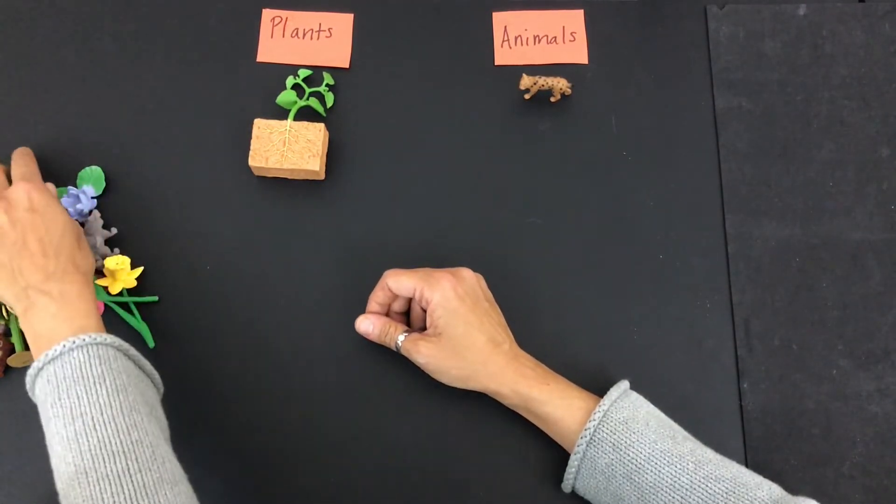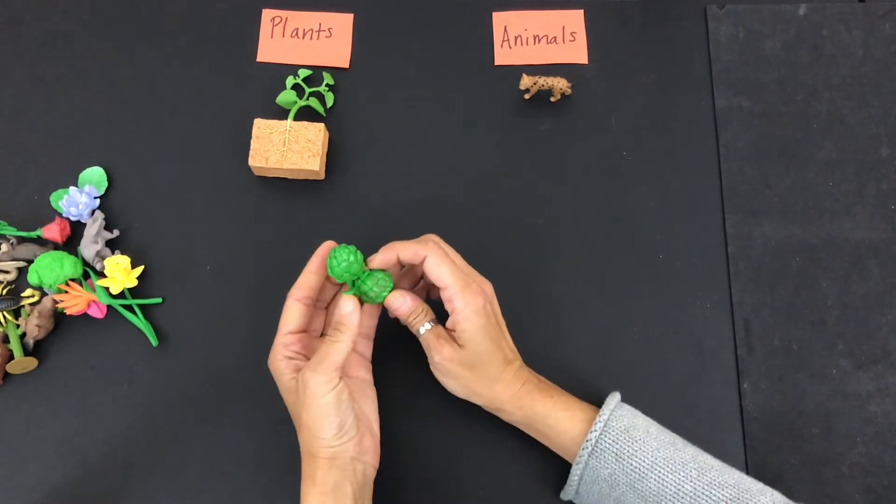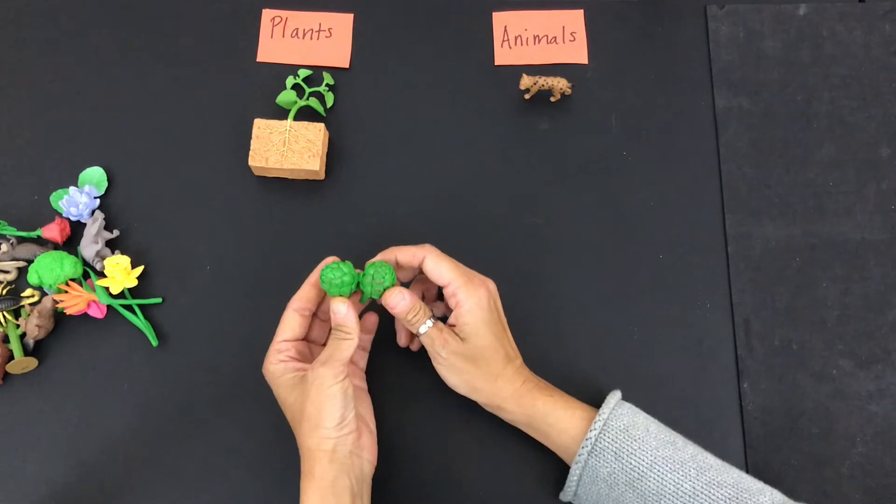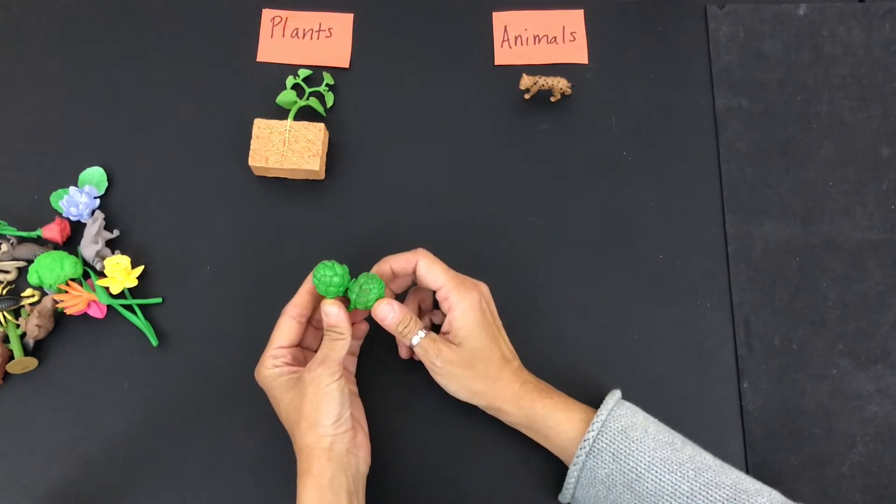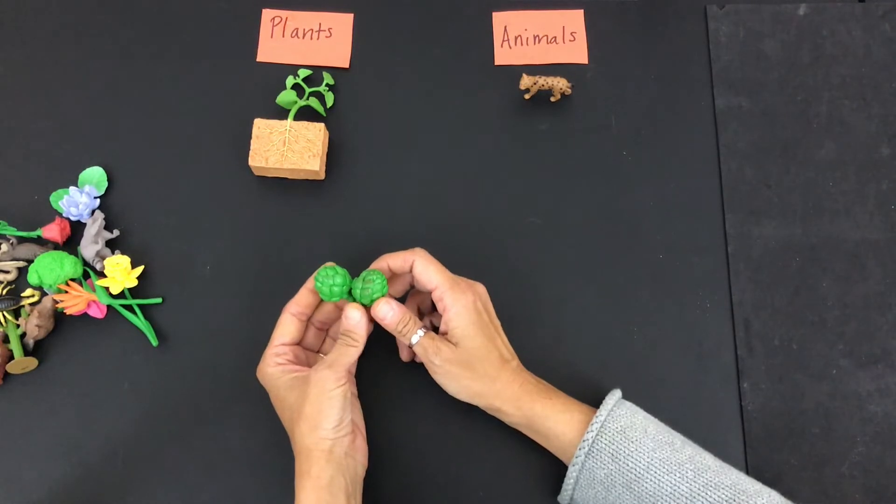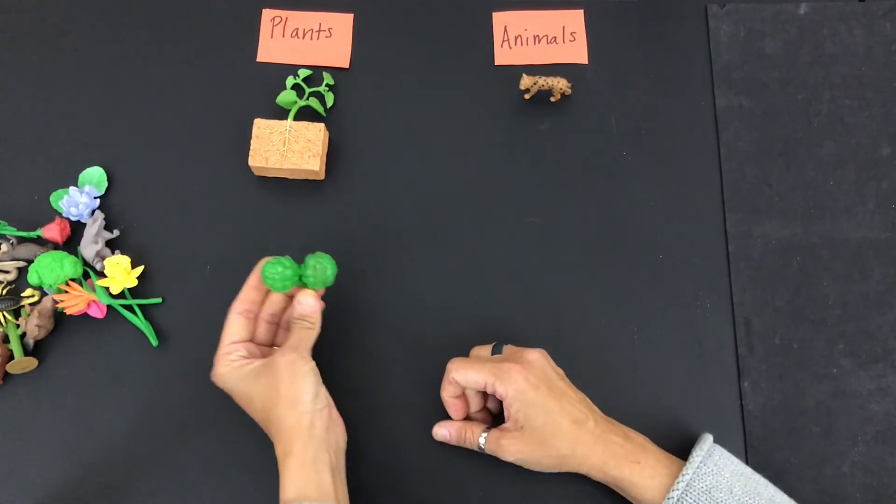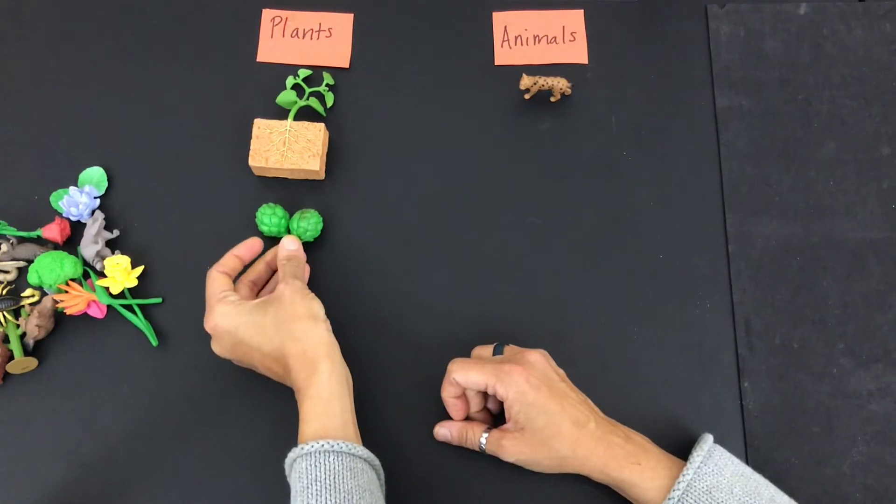Let's see what else we've got here. What about these? You know what these are? These are artichokes. Do you like eating artichokes? I love artichokes. So would artichokes be an animal or a plant? Definitely a plant. Artichokes grow on plants.